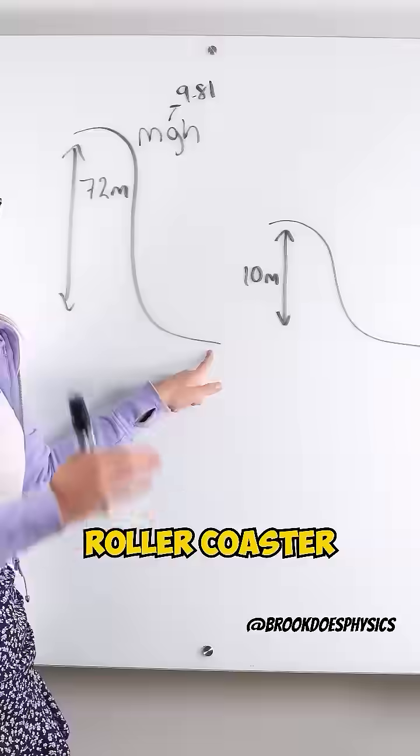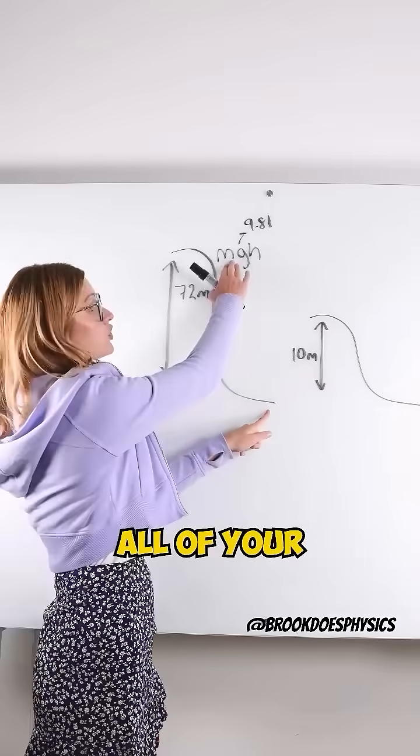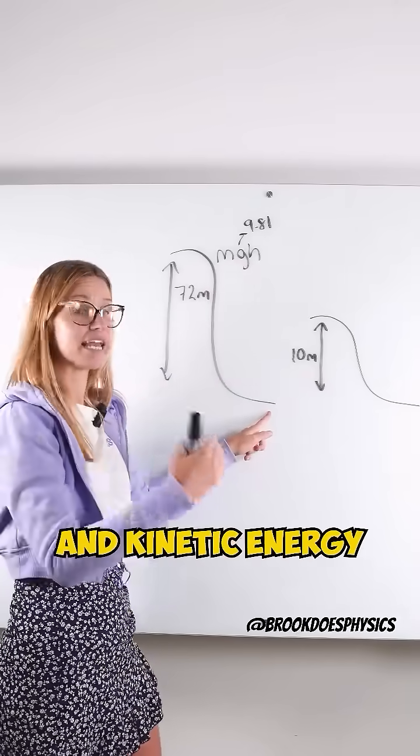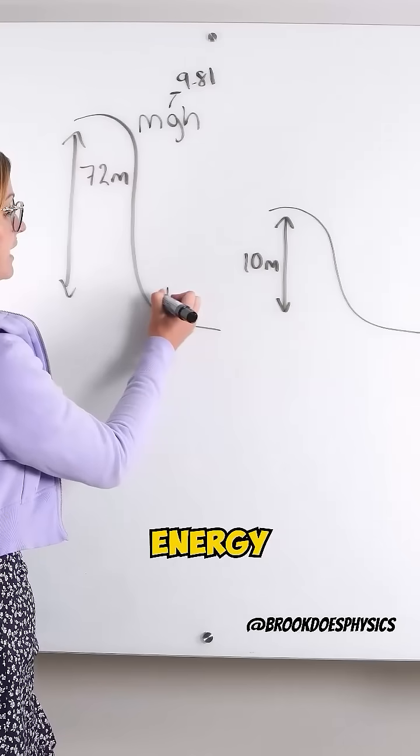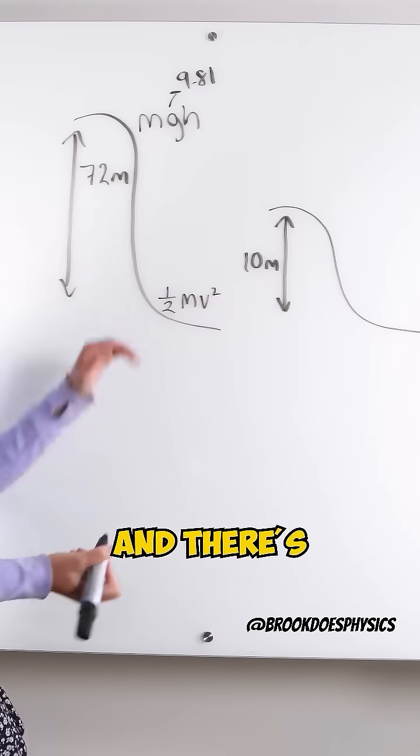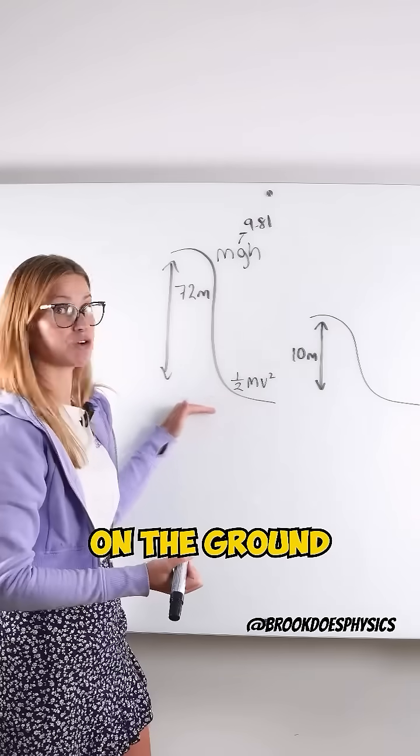When you get to the bottom of the roller coaster, because you're traveling really fast, all of your gravitational potential energy gets converted into kinetic energy. Kinetic energy is when things are moving. Kinetic energy is one half times the mass times whatever that speed is squared. There's no gravitational potential energy because now we're on the ground.